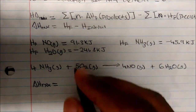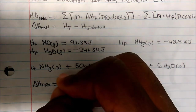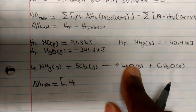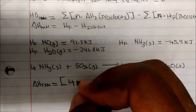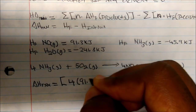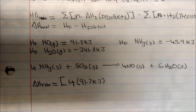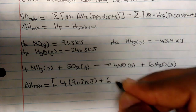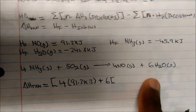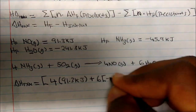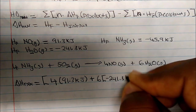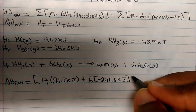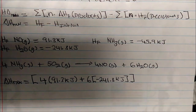Taking a look at the products, this is going to be four times the heat of formation of NO, which is four times 91.3 kilojoules. We're going to add this to the next product, which is six times its heat of formation, negative 241.8 kilojoules. Those took care of our products.